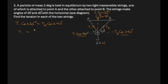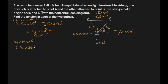Isolating T1: T1 = (cos 40° / cos 35°) × T2. For the vertical equilibrium: T1 sin 35° + T2 sin 40° = 24 N. Substituting the expression for T1: (cos 40° / cos 35°) × T2 × sin 35° + T2 sin 40° = 24.